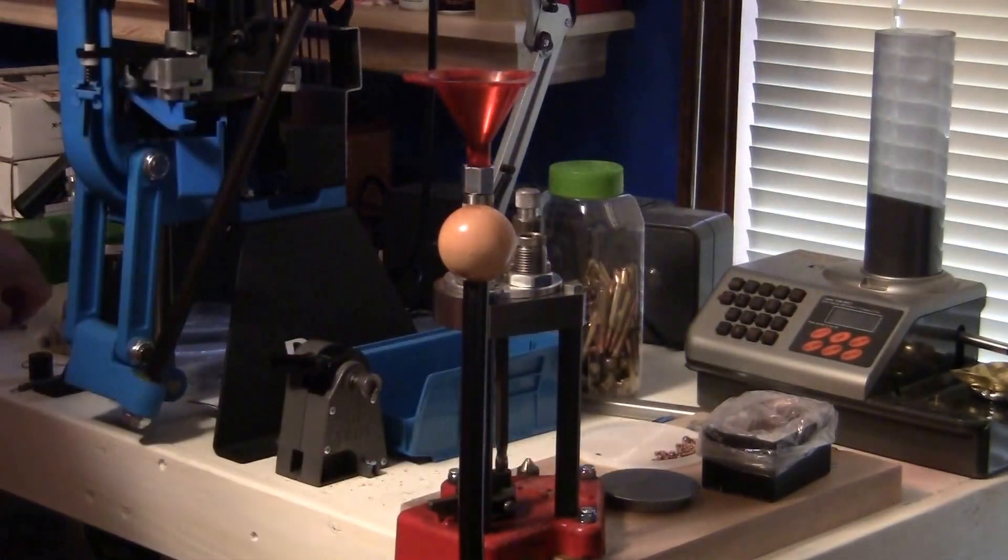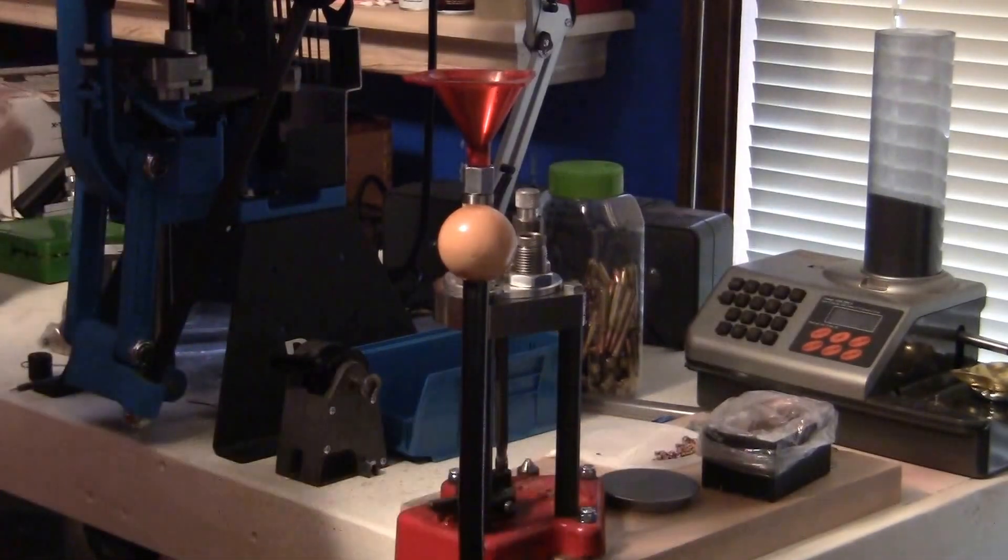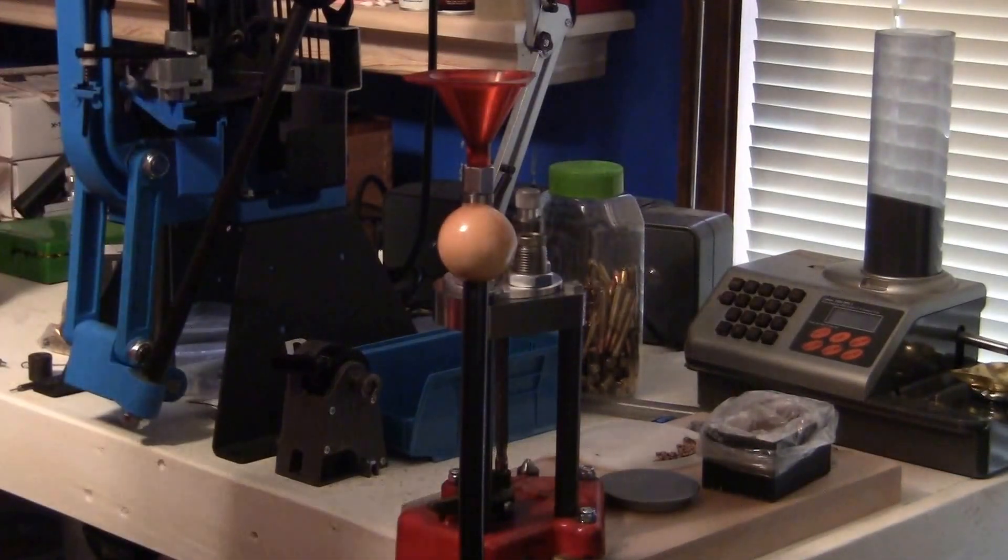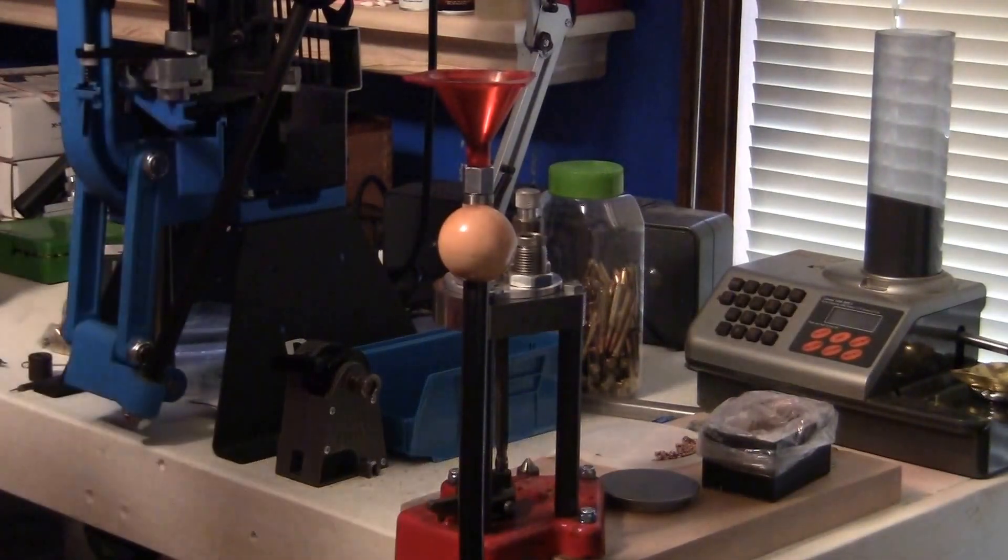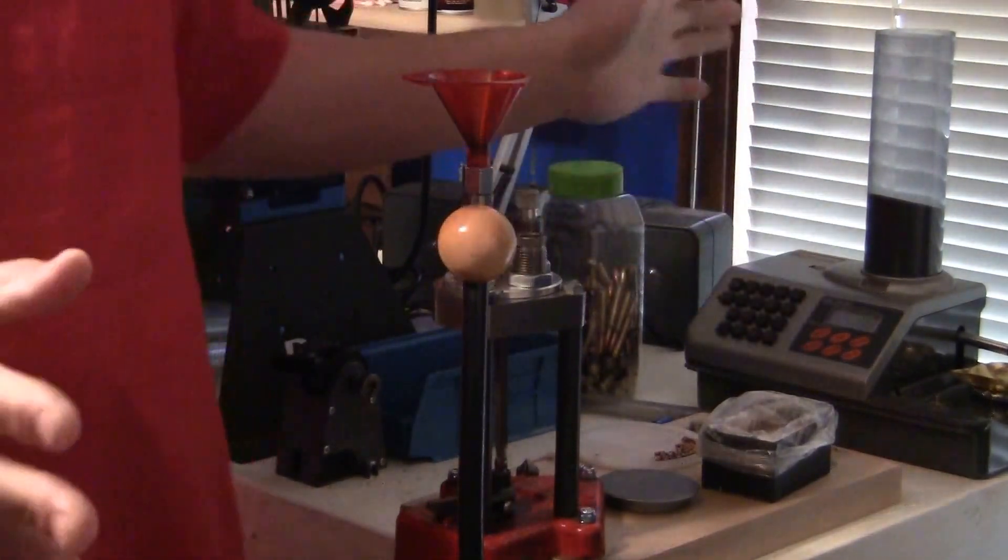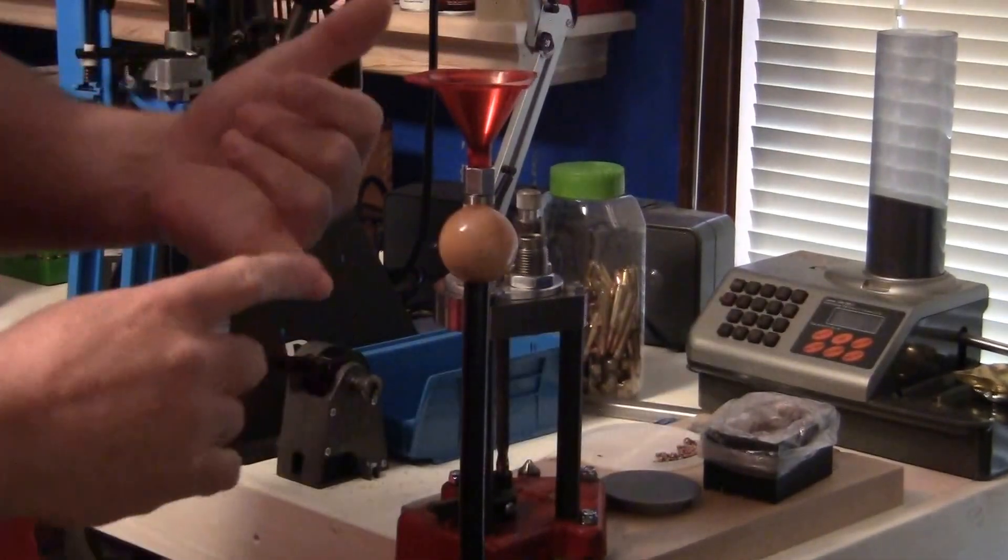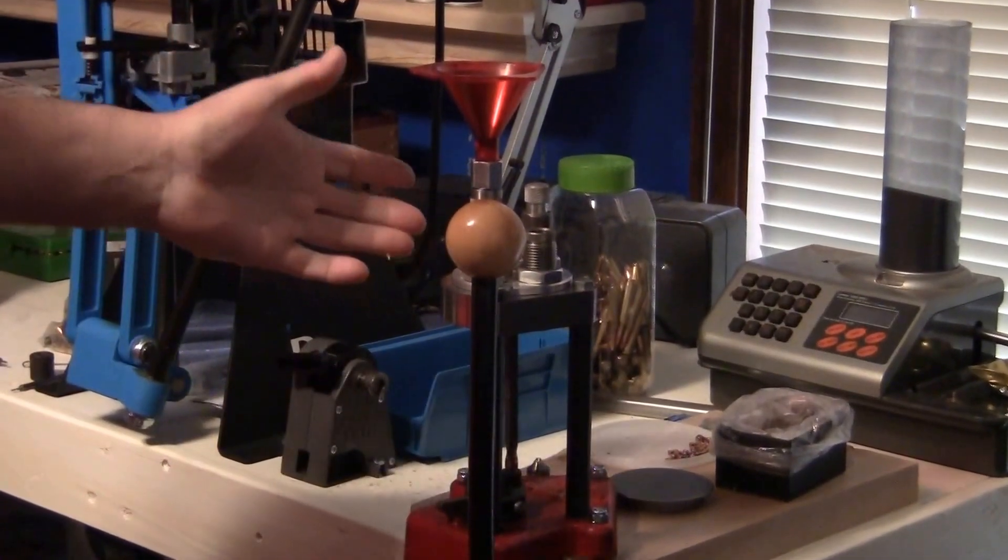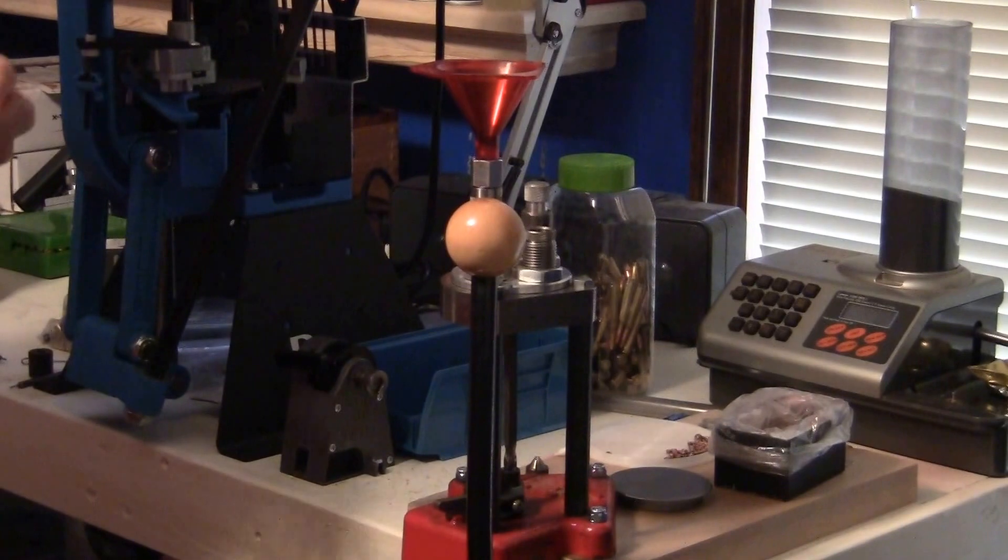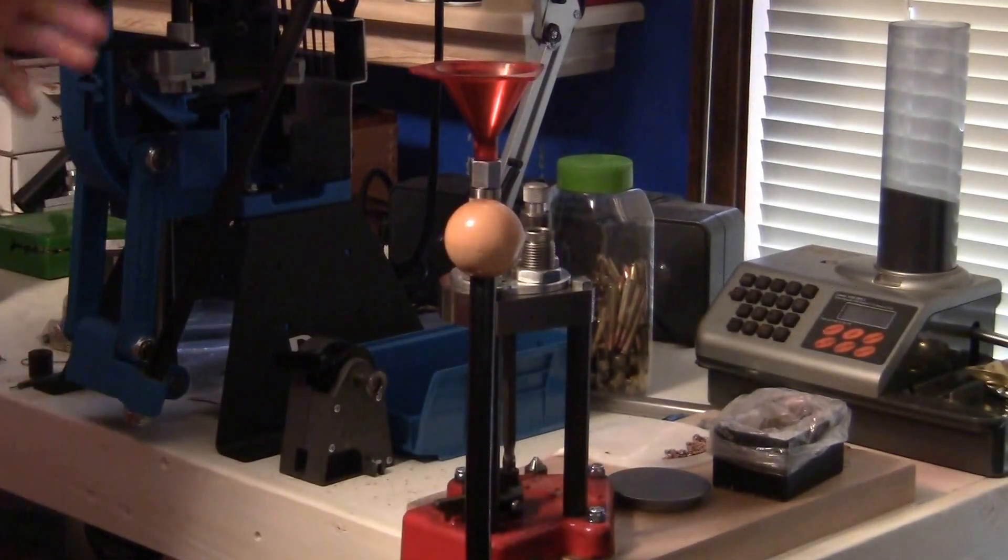I'm loading 24.9 grains of Winchester 846 powder. The neat thing about this Lyman is you don't have problems with any type of powder dispensing. It can be extruded, spherical, anything you want, whereas you will have problems on a Dillon metering extruded stuff, and not just Dillon—RCBS and all the others too.